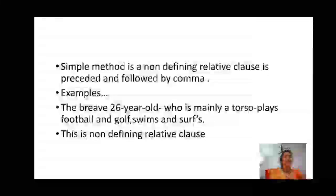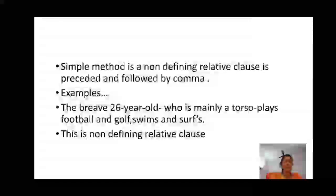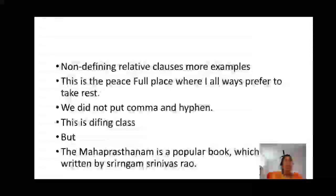In the second sentence, the relative clause adds extra information about Nick — this is a non-defining relative clause. A simple method to identify: a non-defining relative clause uses commas. For example: the brave 26-year-old who is mainly a torso plays football and golf, swims and surfs. This is a defining relative clause example without commas.